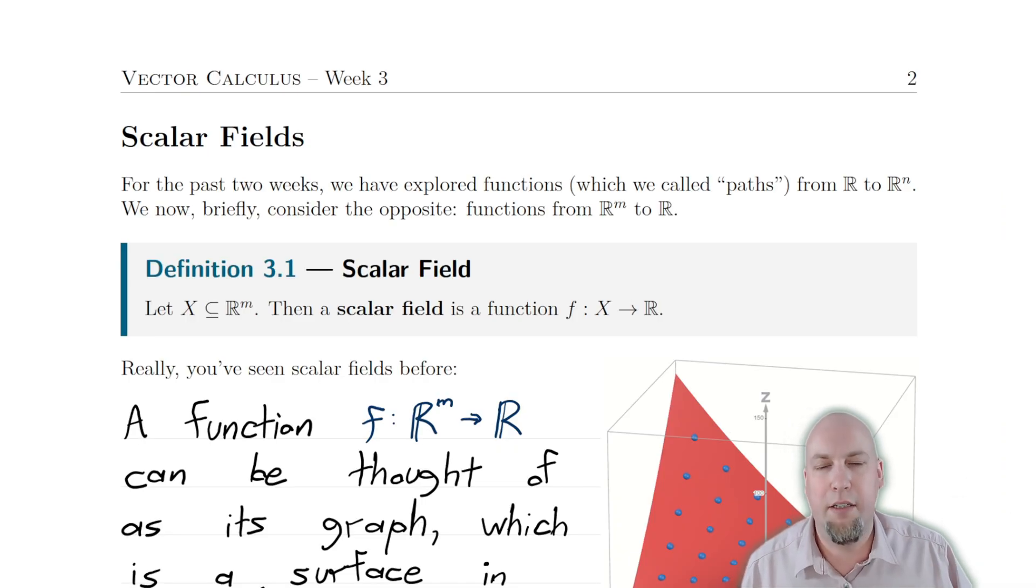Let's start off with what is a scalar field. Intuitively, it's kind of like the exact opposite of a path. Remember the last several videos, we've been talking about paths, which are functions from R to R^n. The important point there is that the input space is one dimensional, so when you plot it you get a curve in space, a curve in R^n.